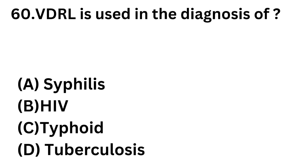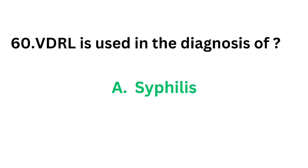Question number 60: VDRL is used in the diagnosis of. Option A: Syphilis. Option B: HIV. Option C: Typhoid. Option D: Tuberculosis. The correct answer is option A, syphilis. VDRL stands for Venereal Disease Research Laboratory and is used for detecting syphilis, which is caused by Treponema pallidum.